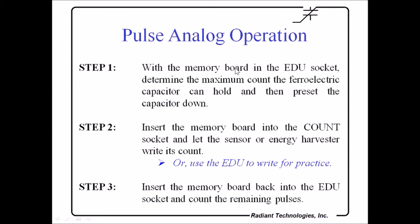So, pulse analog operation has three steps. Step one, put the memory board into the EDU socket. Determine the maximum count so we know how many it counts. Then preset the capacitor down. Move the memory board to where it's going to count. It can count in the count socket. It can be moved to your own circuit. Or you can leave it in the EDU for practice using the EDU to do the counts. When you're done, insert the memory board back into the EDU socket and count the remaining pulses.